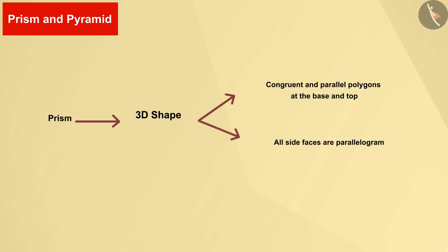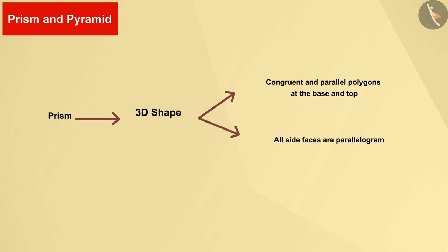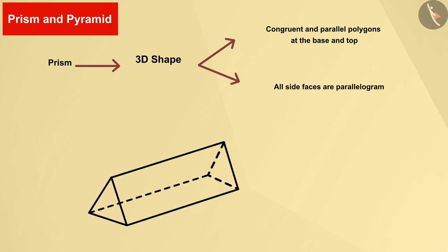Let's look at some of the shapes and understand prisms. Look at this three-dimensional shape. Here some lines are dotted. These are lines that cannot be seen from this view. Look at the base and the top end of this shape. It is a long figure with base and upper ends.